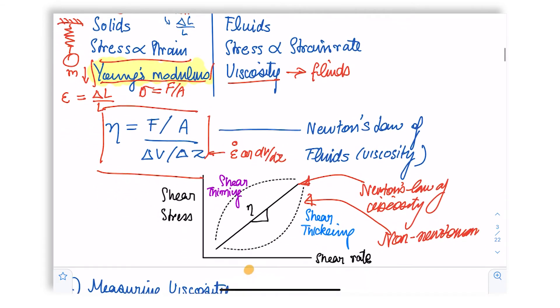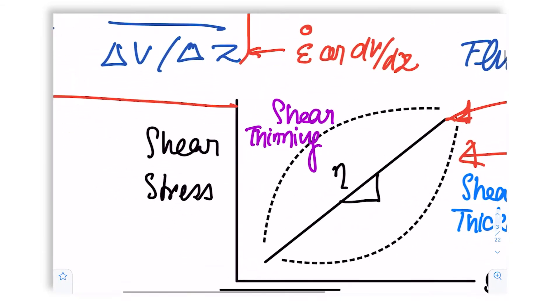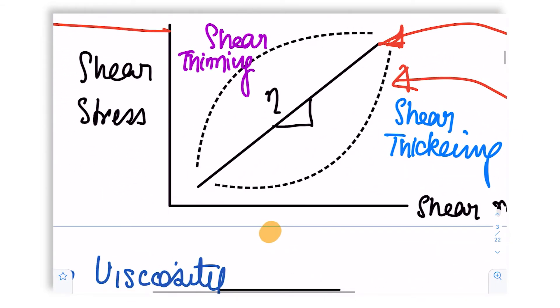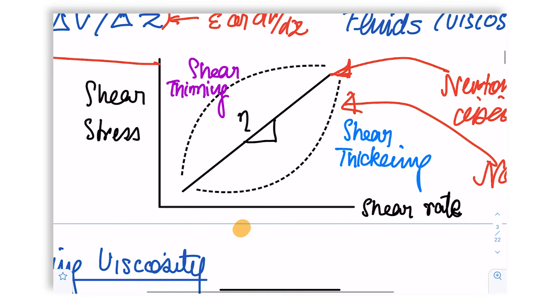Indeed, the reason we're bringing up Newton's law is that if you plot shear rate or strain rate on the x-axis and shear stress or stress on the y-axis, then the proportionality constant eta is nothing but the slope of this line.